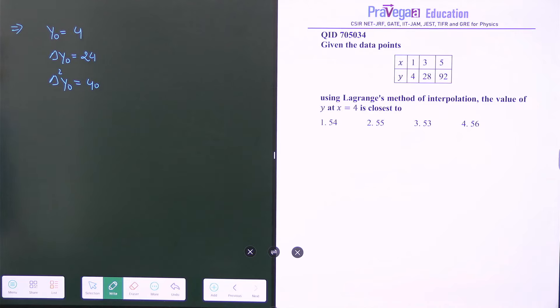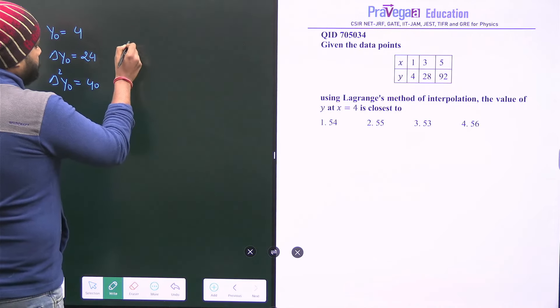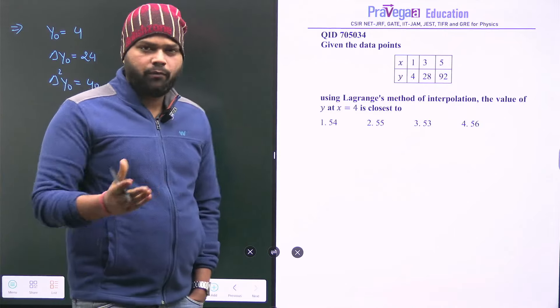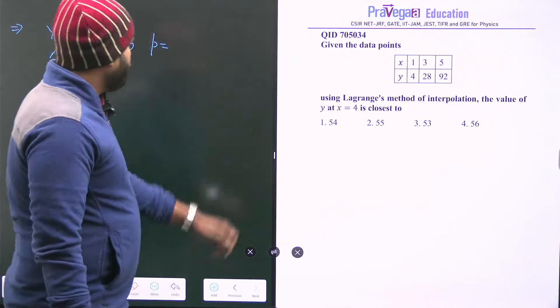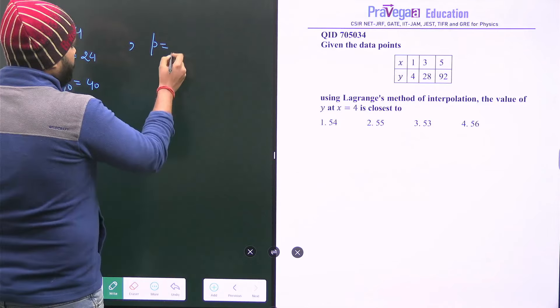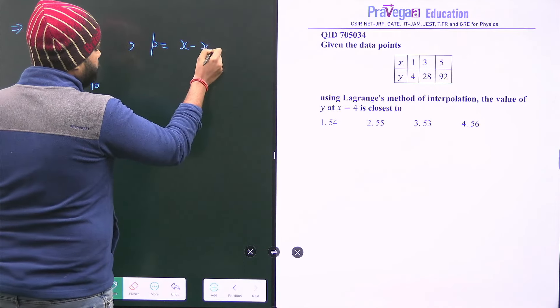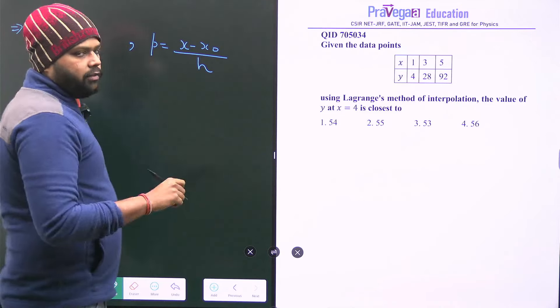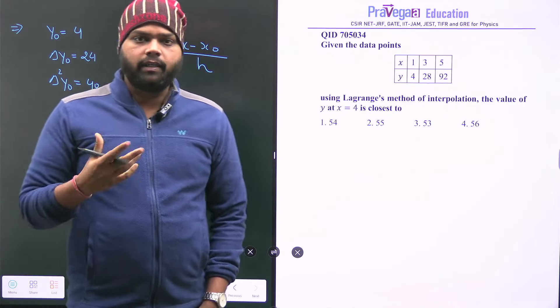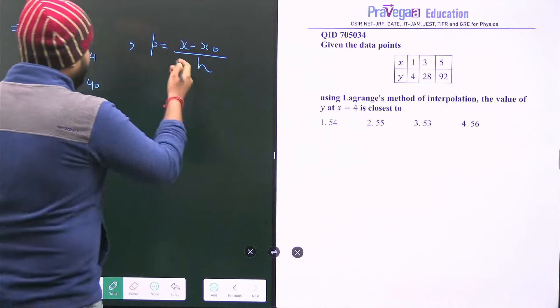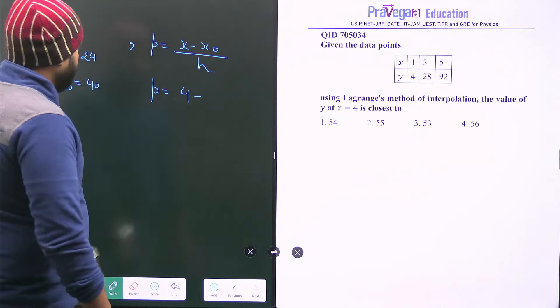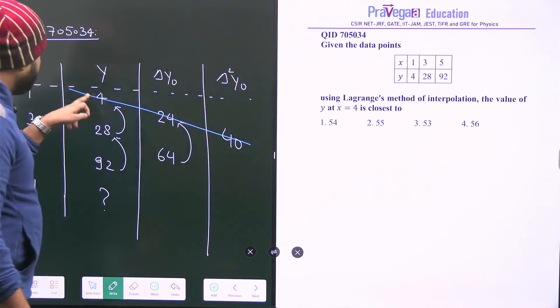Now we have to find the value of P. And after that we will use the simple formula, mathematical expression from the Newton's forward difference method. How you have to find the P? That is x minus x0 by h. What is x here? x is the value on which we have to find the value of y. That is where x is 4. Value of x is 4 minus, what is the value of x0?